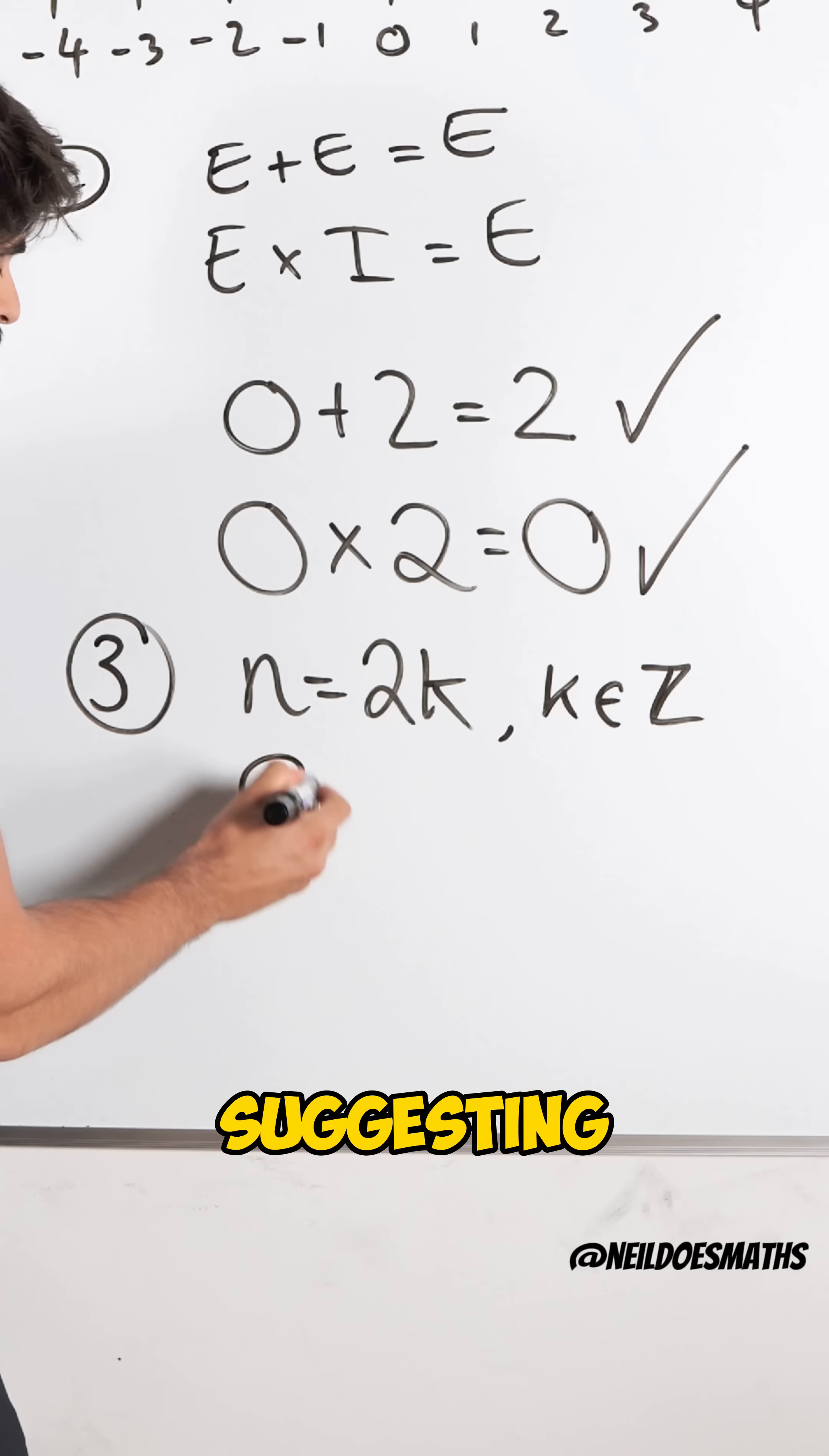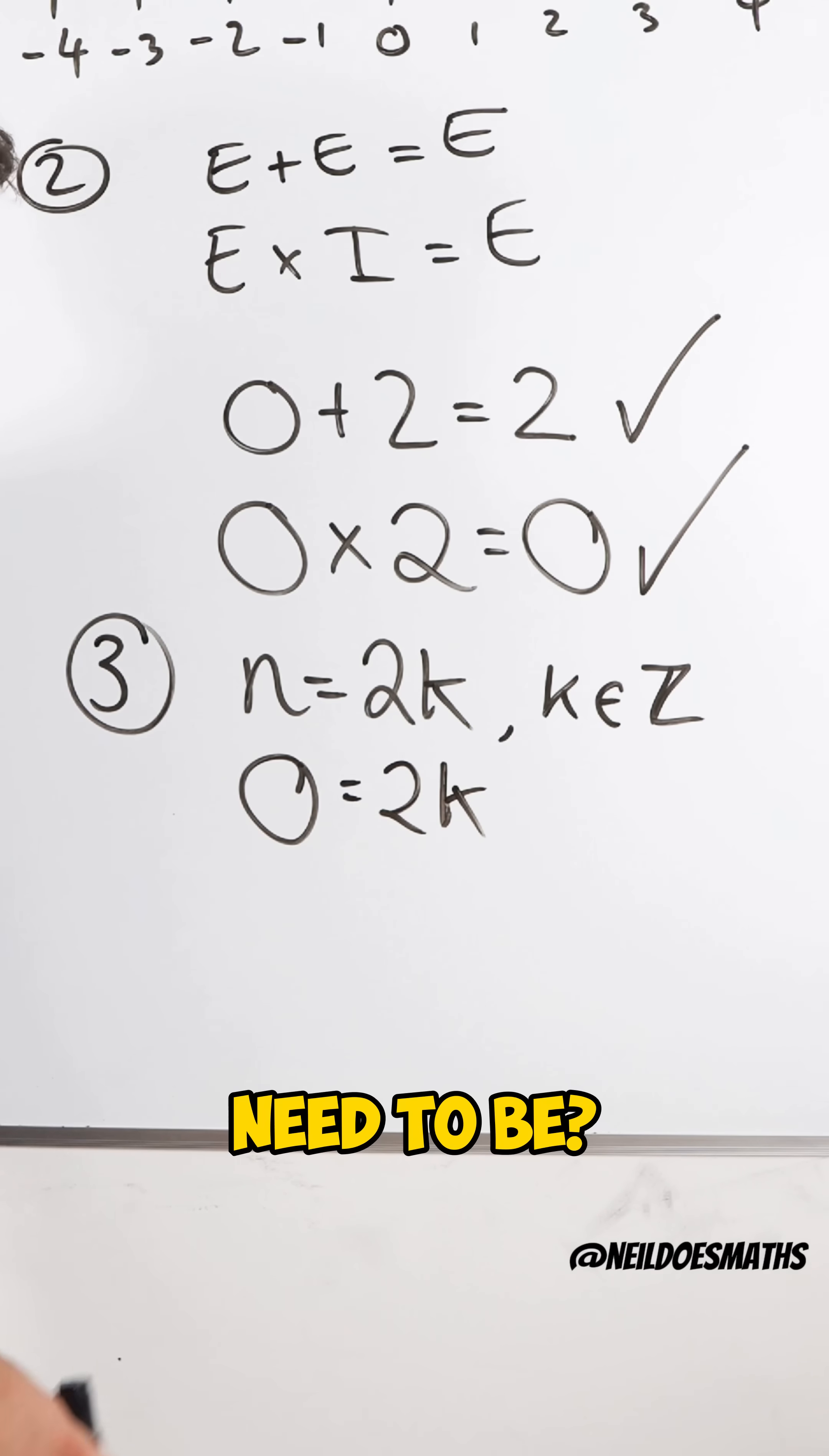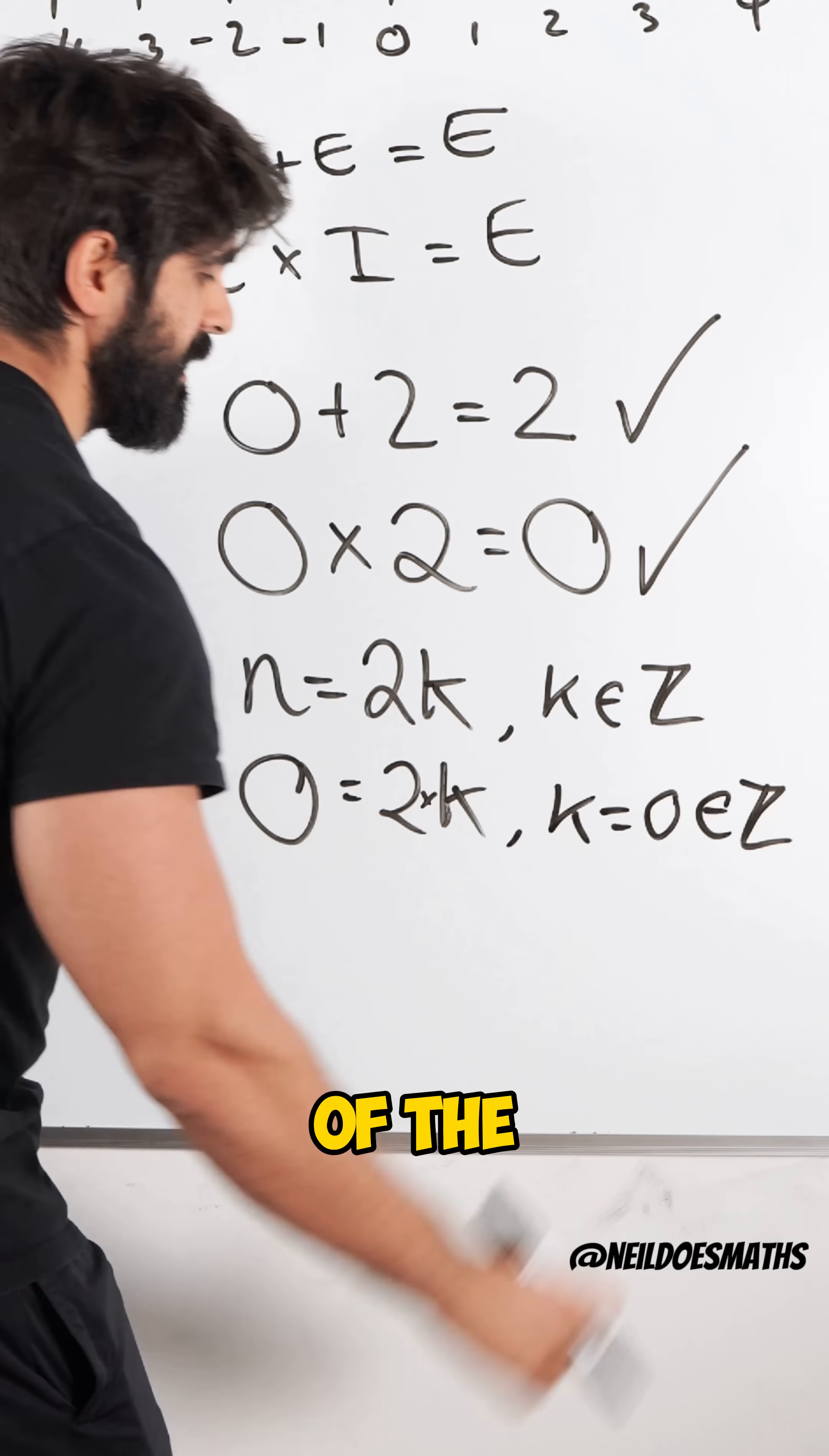So if I am suggesting n being zero is an even number, what would k need to be? Well, two times zero is zero. So k here would have to be zero, which is an element of the integers.